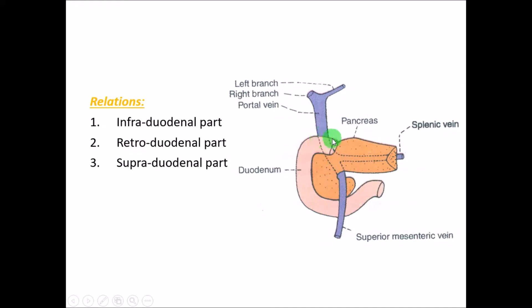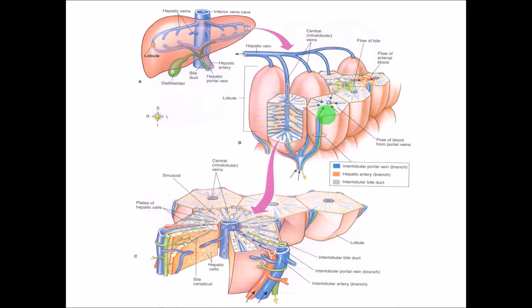The portal vein has three parts based on its relation to the duodenum: the infraduodenal part, which is below the duodenum, where anteriorly we see the neck of the pancreas and posteriorly the aorta and inferior vena cava; the retroduodenal part, where anteriorly there is duodenum and posteriorly the aorta and inferior vena cava; and the supraduodenal part, where anteriorly is the right lobe of the liver and posteriorly the inferior vena cava and aorta.